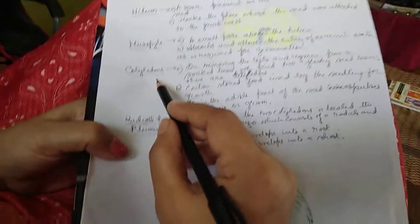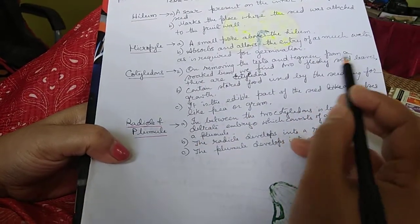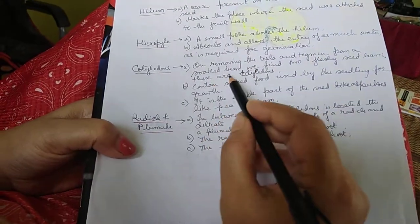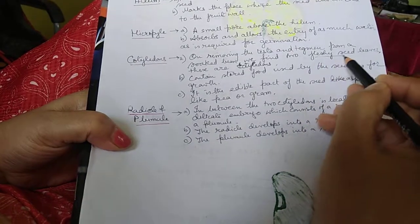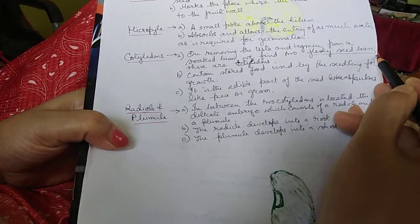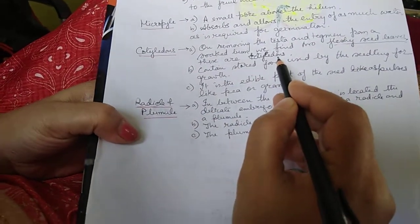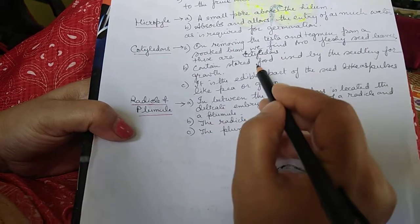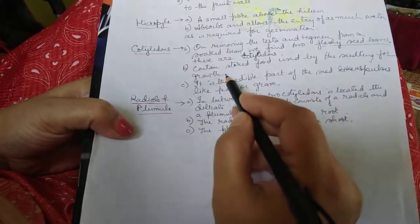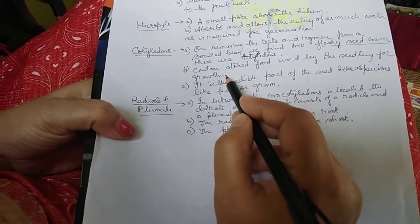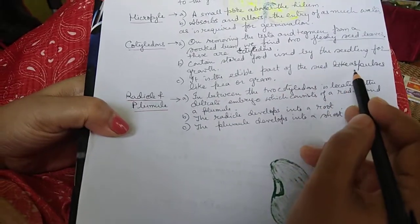When removing the testa and tegmen from a soaked bean seed, we find two fleshy seed leaves — these are the cotyledons. Cotyledons contain stored food used by the seedling for growth. They form the edible part of the seed, as in pulses like pea or gram.